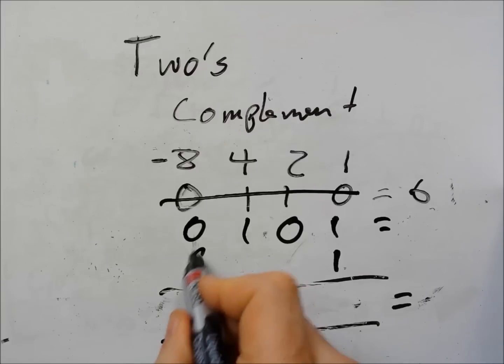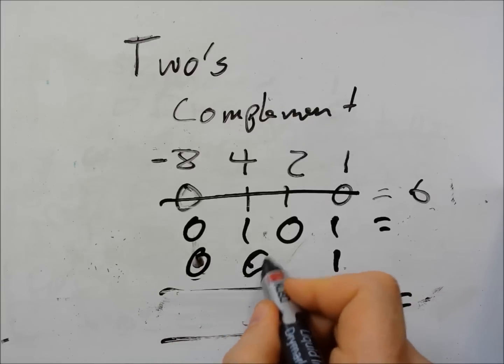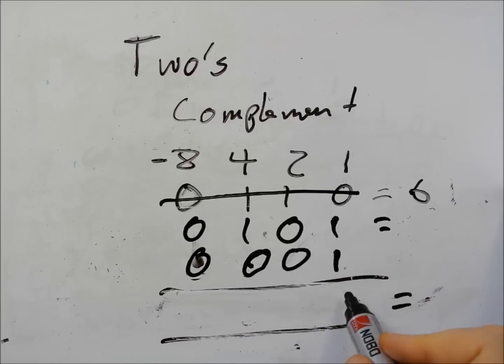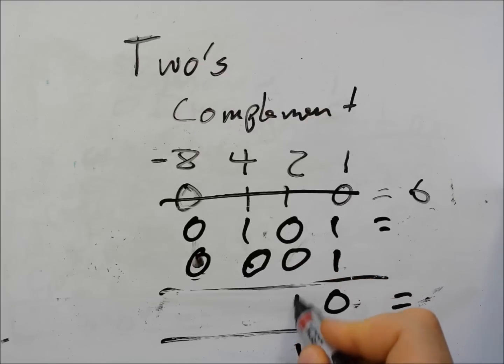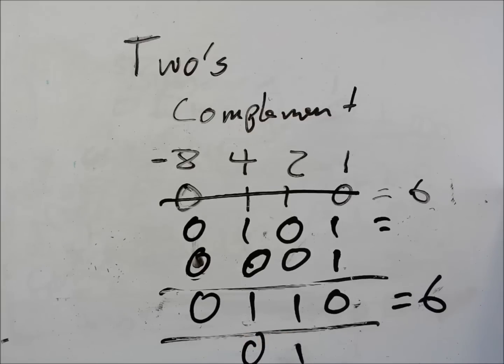So I do my addition. One and one is zero carry one. One carry nothing. One. So I can convert between positive and negative numbers really easily. Have a go and try some for yourself.